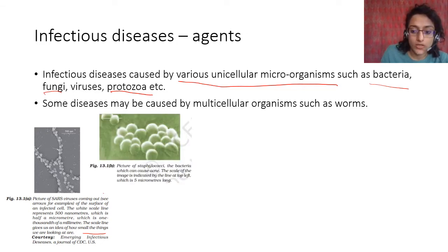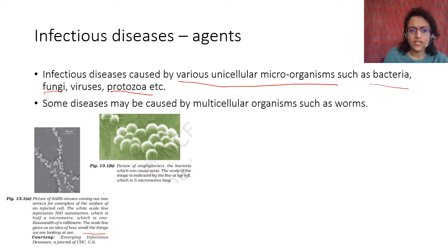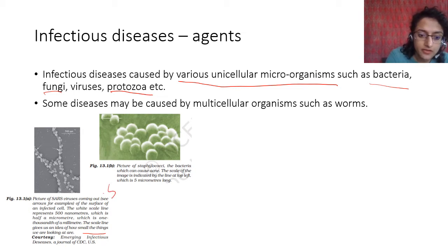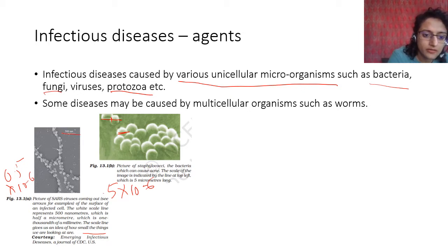This is Staphylococcus, the bacterium which causes acne on the skin. Staphylococcus is normally found on the skin and sometimes becomes infectious. This scale bar is 5 micrometers long, which is 5 × 10⁻⁶ meters. The bacteria are about half of that scale. The virus is much smaller than the bacterium — about 7 or 8 viruses would fit within the same space as one bacterium. It's important to know the scale and what it means.